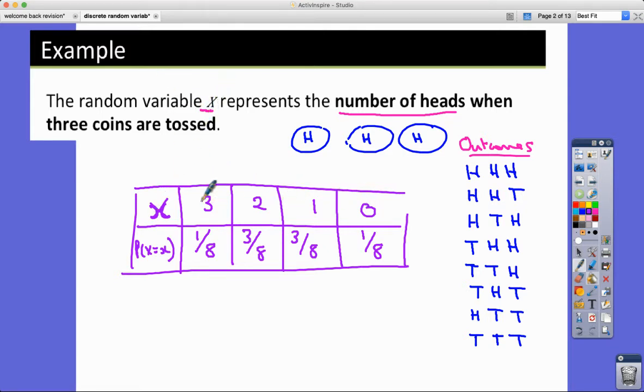So there's the probability distribution for that particular random variable x. And they do add up to eight eighths, don't they? One plus three plus three plus one is eight. Eight eighths equals one.